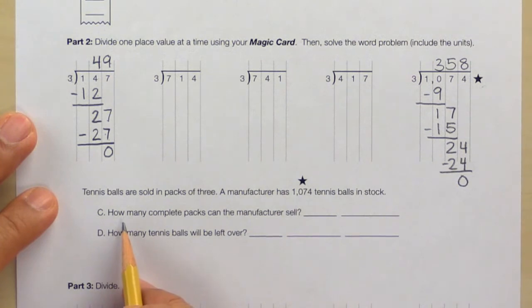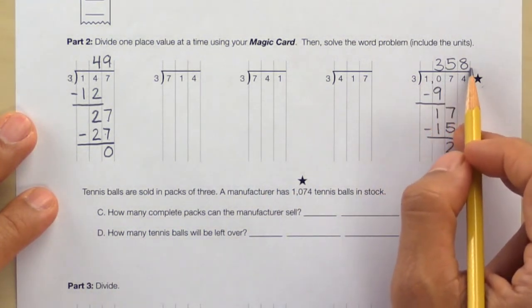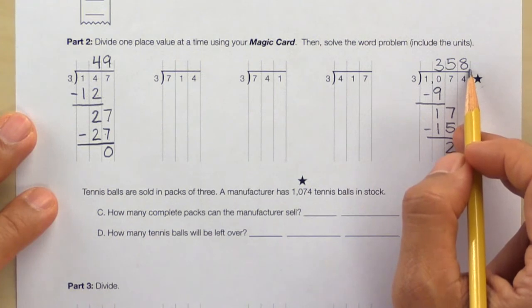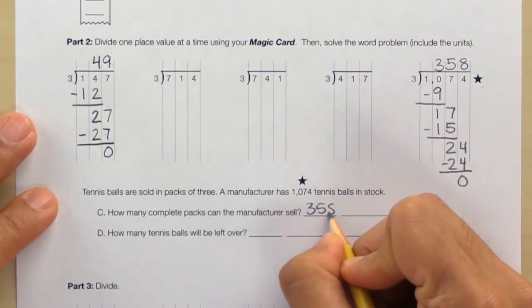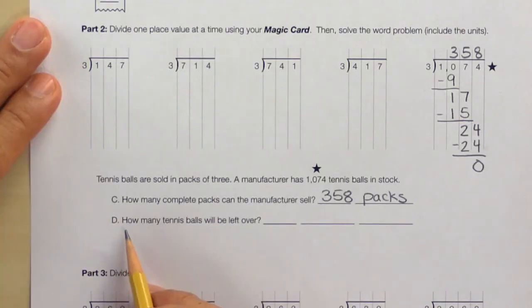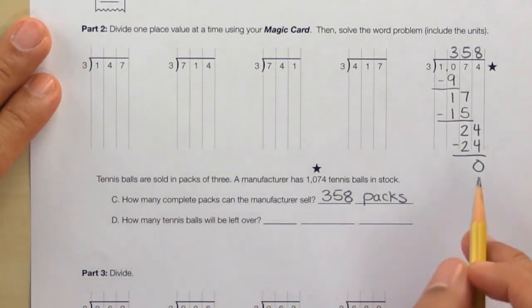can the manufacturer sell? And we see here that the manufacturer can sell 358 packs. Here's letter D: How many tennis balls will be left over? And since there's no remainder, we know that zero tennis balls will be left over.